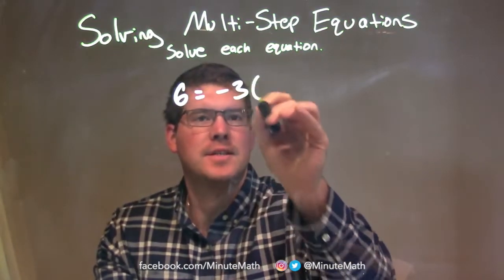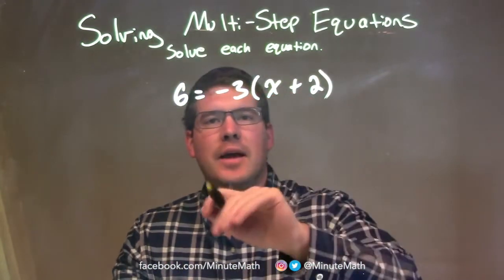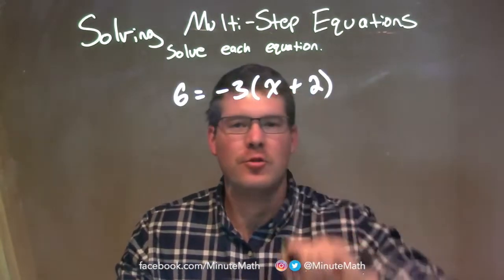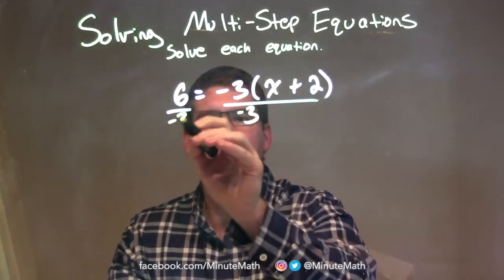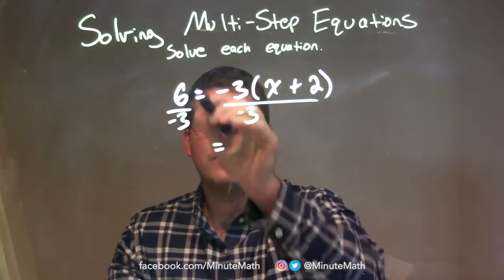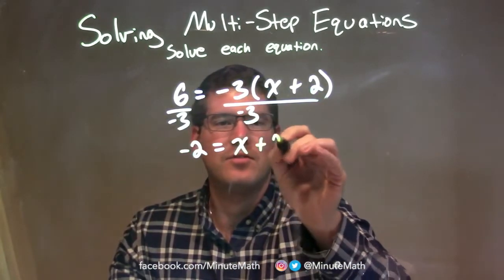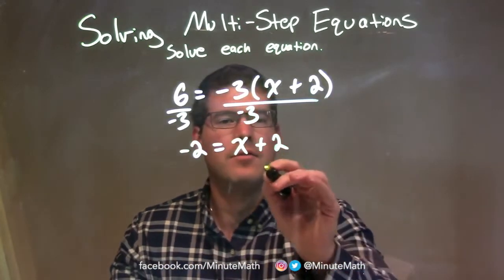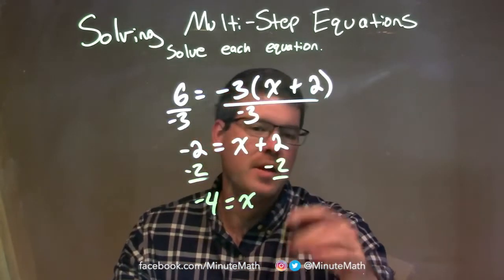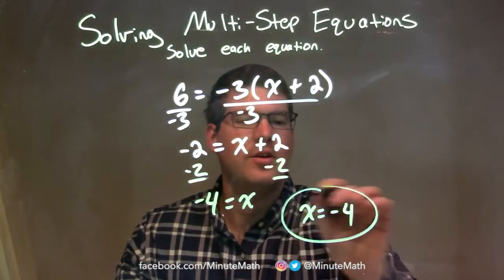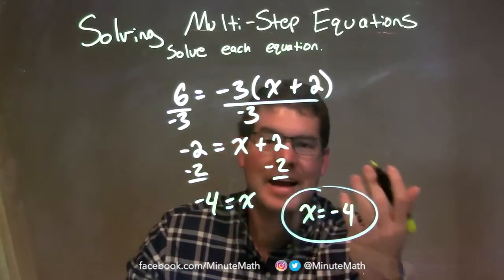6 equals negative 3 times (x plus 2). I see a multiplication — negative 3 times whatever is in the parenthesis. Normally I would distribute, but this time I'm going to divide by negative 3 on both sides. That leaves 6 divided by negative 3, which is negative 2 on the left. On the right, what's left in the parenthesis is x plus 2. Then I subtract 2 from both sides: negative 2 minus 2 is negative 4, equal to x. So x equals negative 4. I did it a little differently, but you can see how simply we get to our final answer.